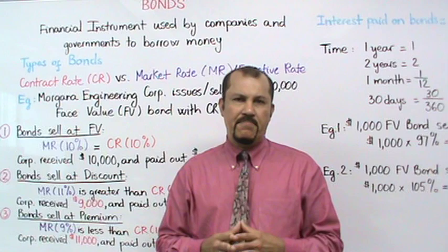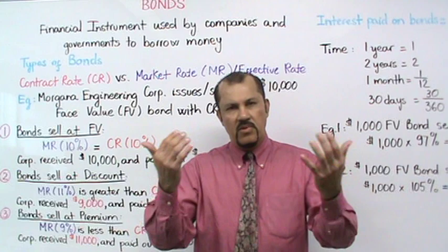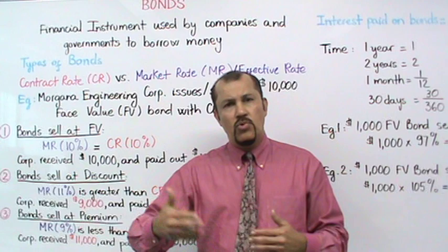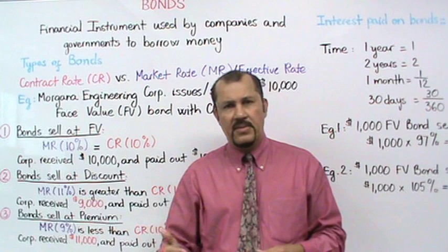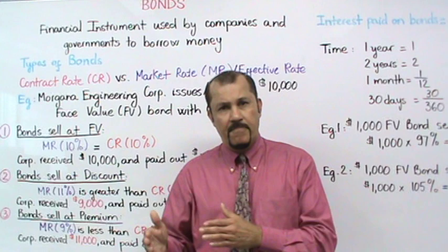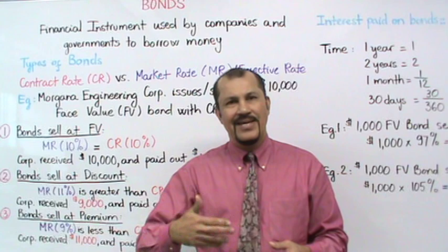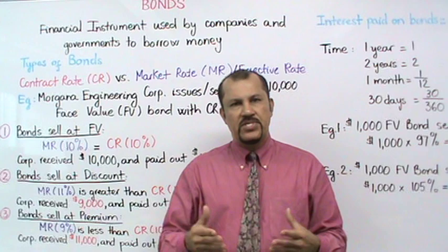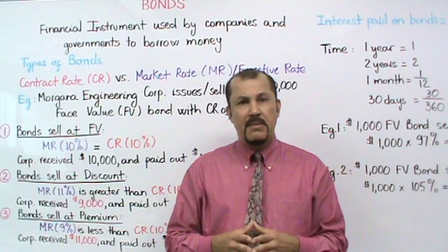What does that mean? Morgana Corporation will try to sell the bond and get some money in return, and they'll use that money for expanding their operations. At the end of the bond term — in this case at the end of five years — they will have to repay that entire $10,000 all at one time. In addition to repaying the face amount, Morgana Engineering will also have to pay the investor interest at the contract rate. The frequency of the interest payments will also be specified in the bond agreement — that could be payments made semi-annually, annually, etc.